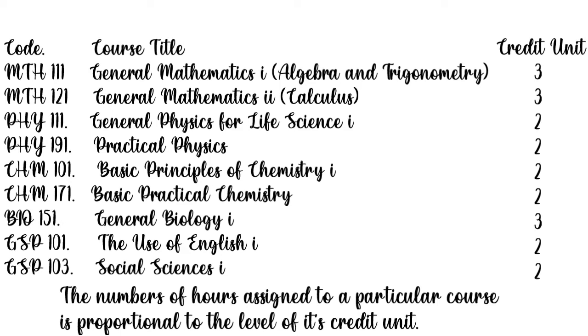The higher the time you spend learning that course, there is more likelihood that that subject will be harder than one that you spend fewer hours studying per week. For instance, GST 101 which has a credit unit of 2 — it is most likely that Math 111 will be more difficult than GST 101. So that is what a credit unit means: the number of hours that you spend studying those courses in class per week.